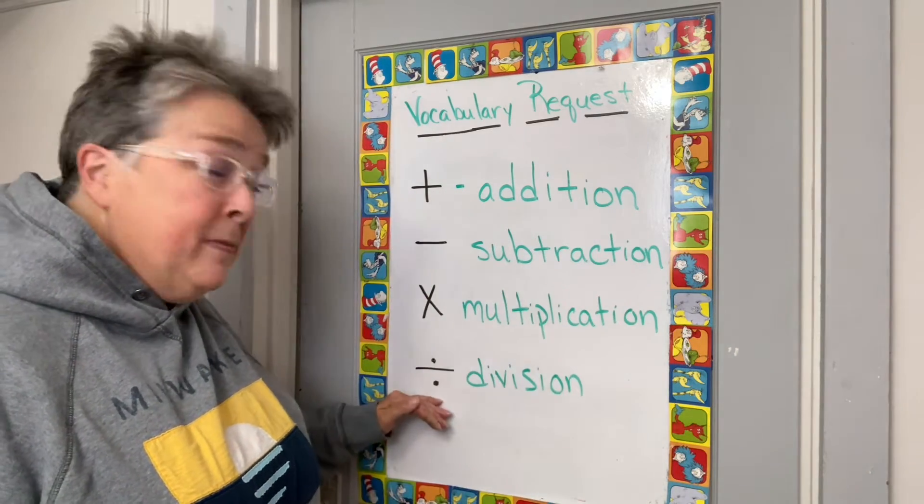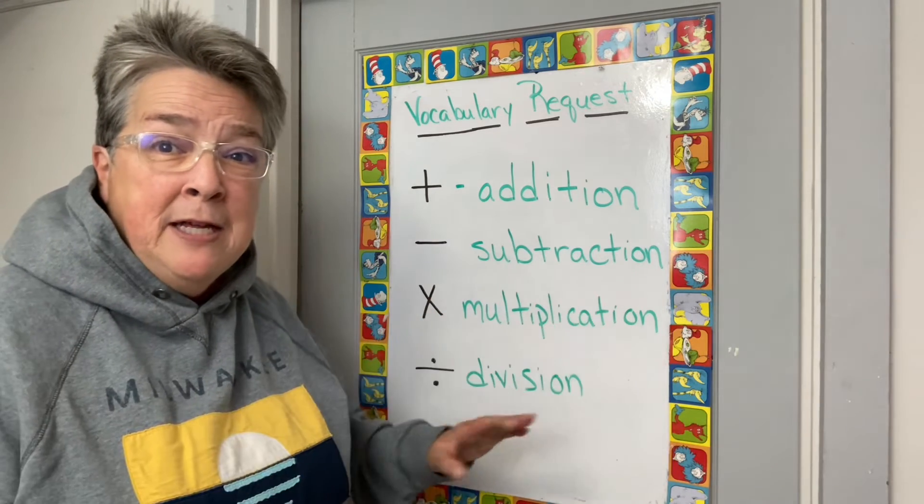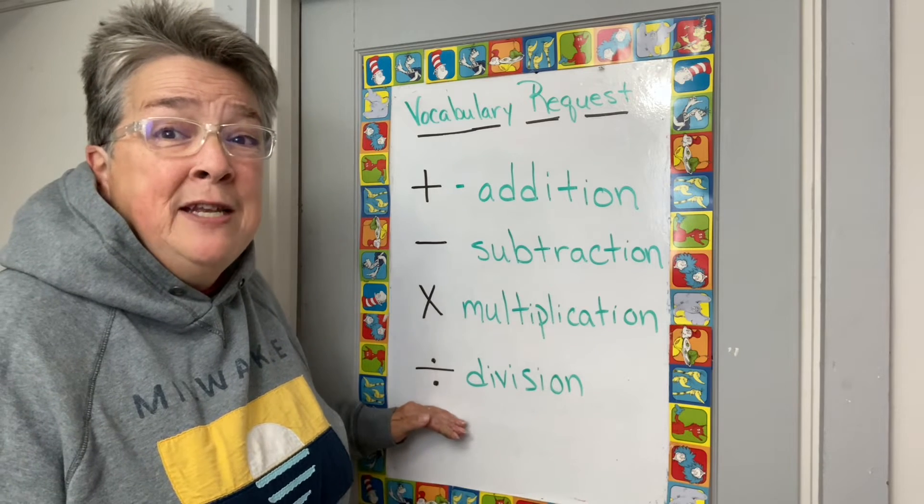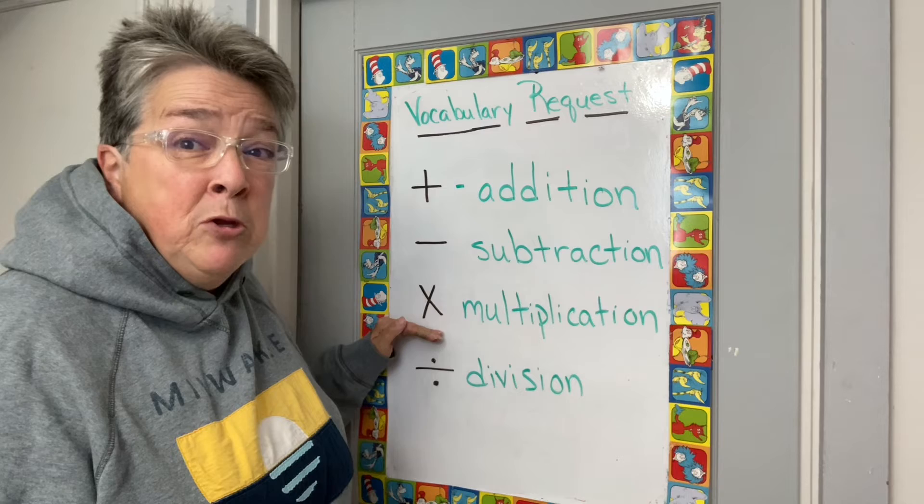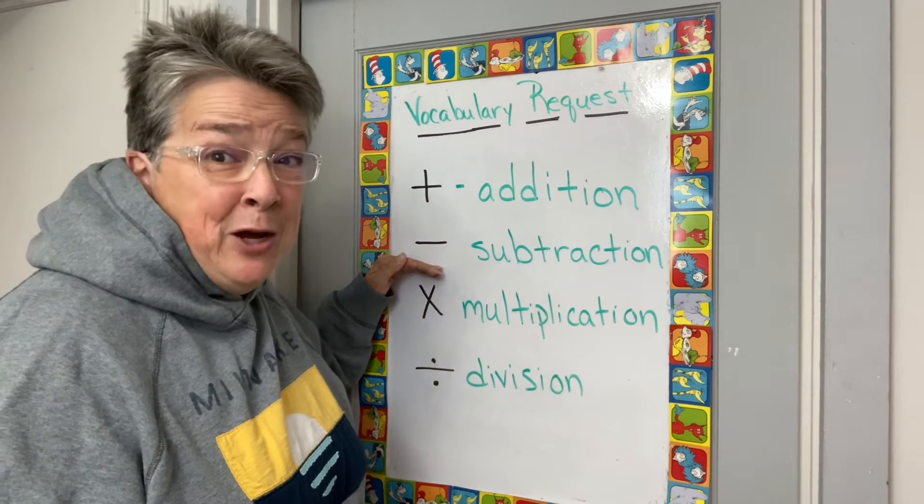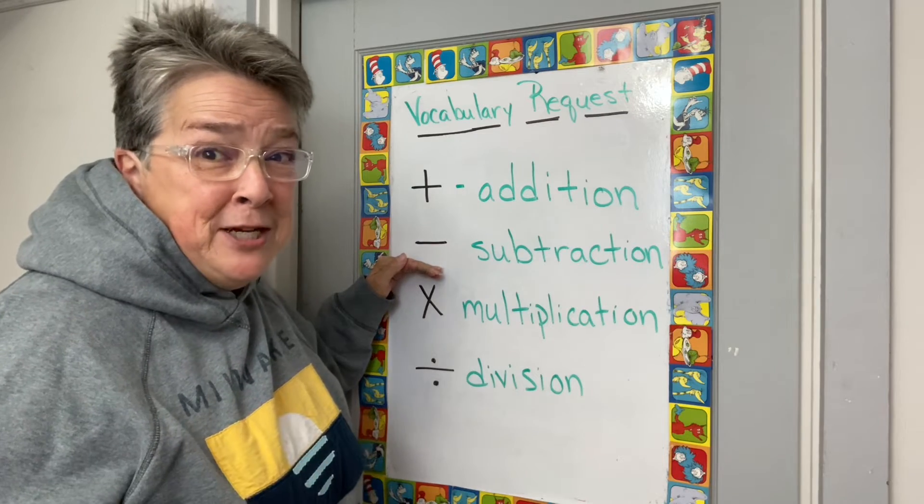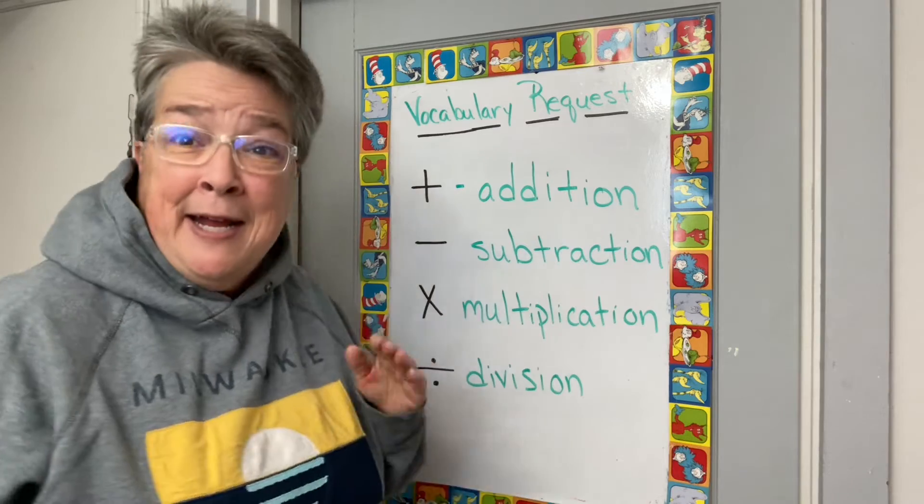And this little beauty right here, division. We divide. When we break things up into equal parts, we use division. We divide with division. We multiply with multiplication. We subtract or take away with subtraction. And we add with addition.